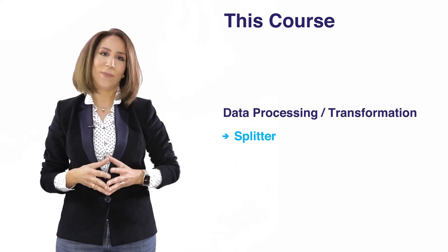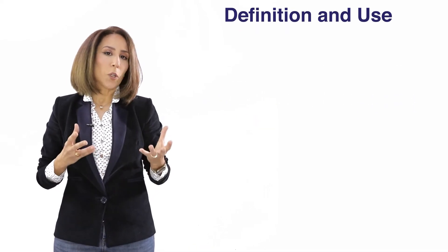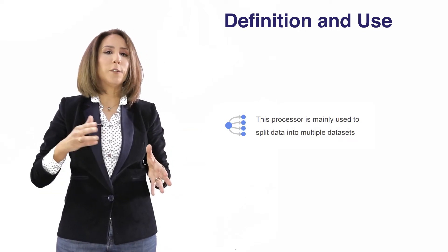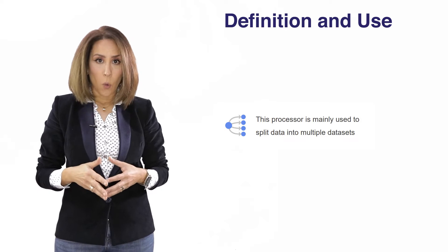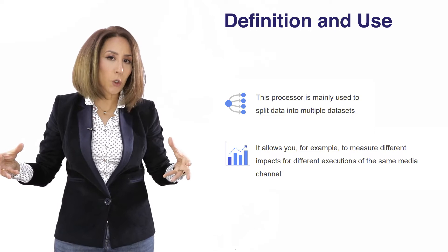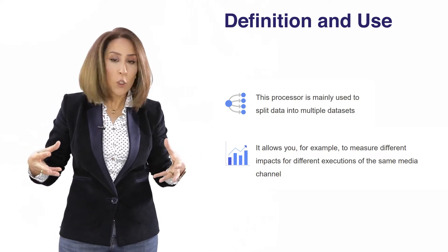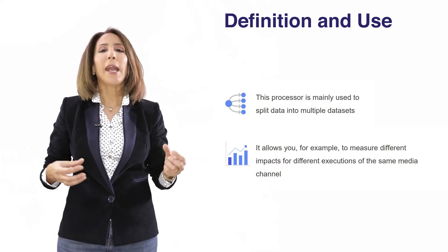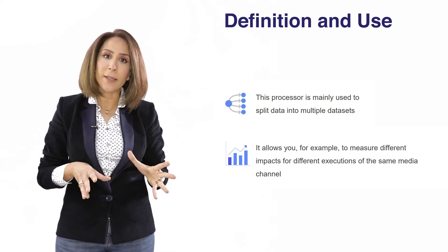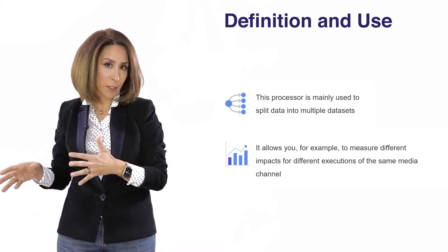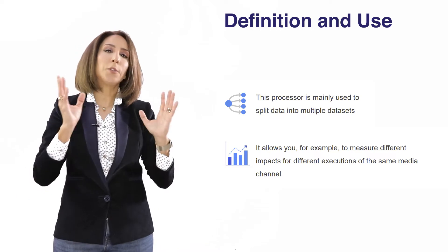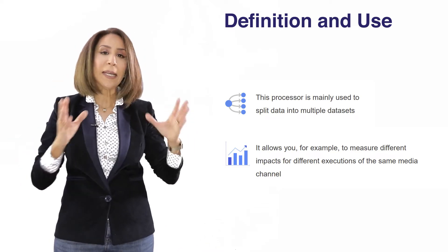The splitter processor. So what this processor allows you to do is to split your variable into different other variables. One of the applications that I can think of is that you have received your total paid search variable for example and you want in your modeling to account for the fact that different campaigns could have different impacts.